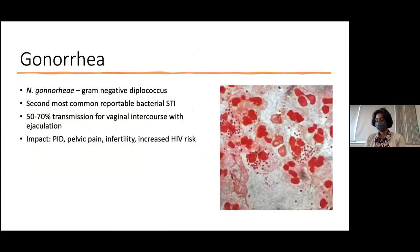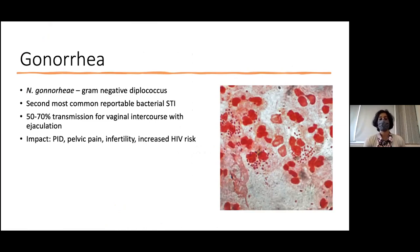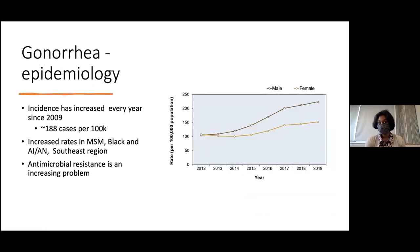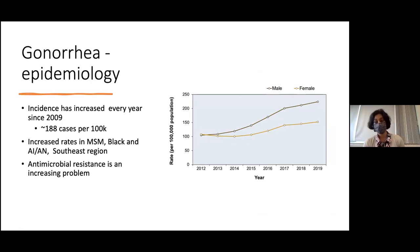Gonorrhea is the second most common reportable bacterial STI in the U.S. and in Washington. It preferentially attaches to mucous-secreting epithelial cells and is highly transmissible — vaginal intercourse with ejaculation results in 50–70% transmission. It carries significant morbidity including PID, chronic pelvic pain, infertility, and increased HIV transmission risk. Incidence has increased every year since 2009, with particularly high rates in MSM and Black and Native populations. Unlike chlamydia, gonorrhea has a male predominance.